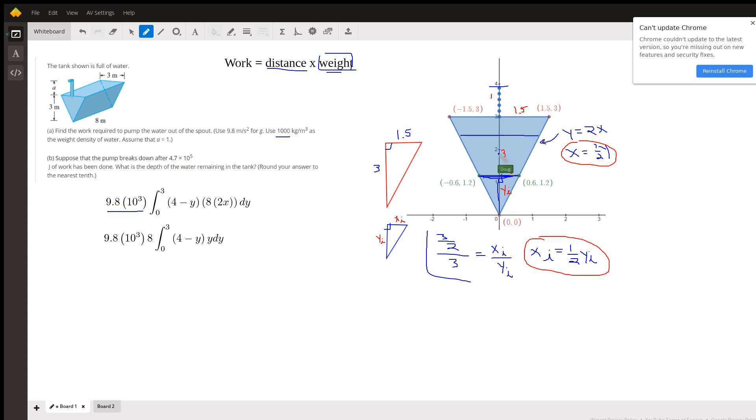Another way to find the relationship is to write the equation of this side right here. You know two points that this line passes through, 0, 0 and 3 halves comma 3. You can calculate the slope, use point slope, and you get y equals 2x. Solved for x, x is 1 half y.